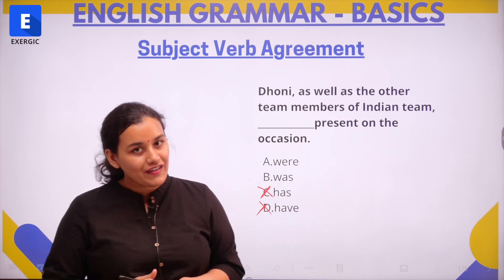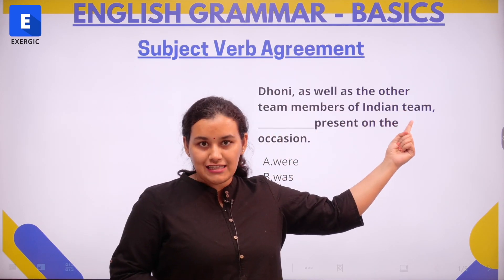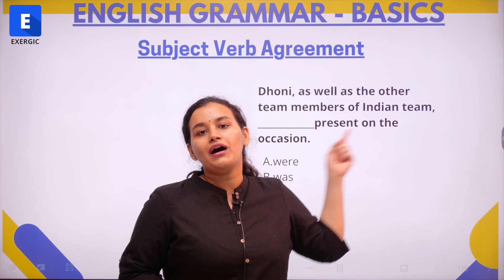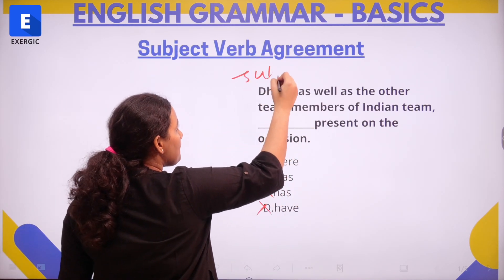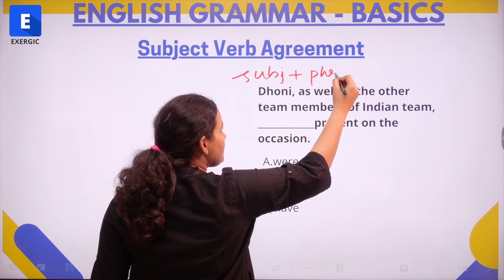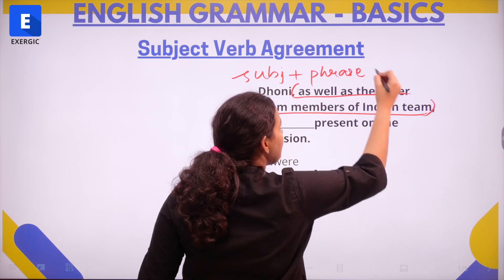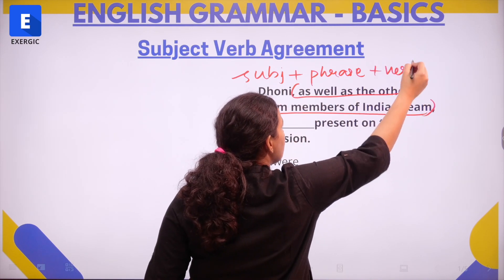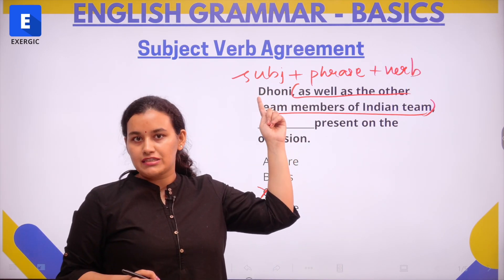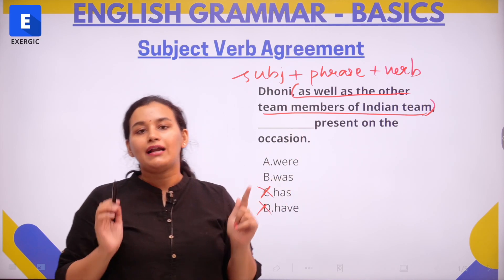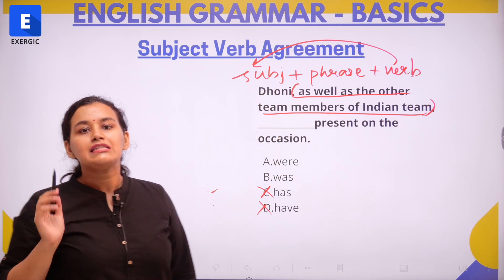However, that is not the case. In this sentence we have a subject, then a phrase within commas, and then the verb. So the sentence is in the form of: subject + a phrase given within commas + the verb. Whenever a phrase is following the main subject of a sentence, the verb is always going to take the form of the main subject.